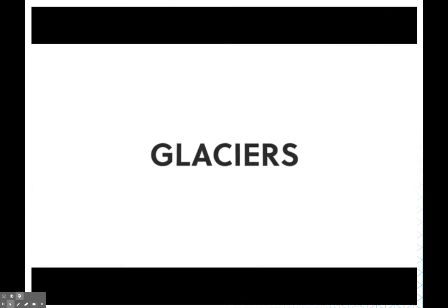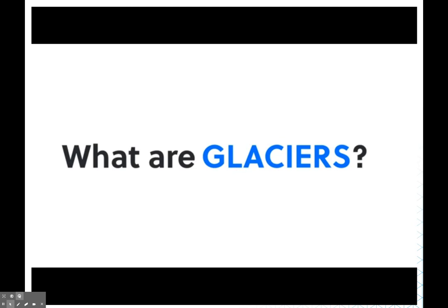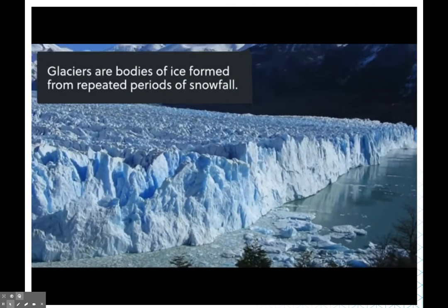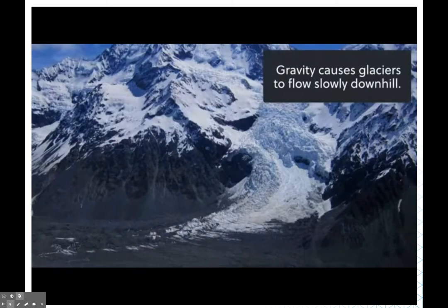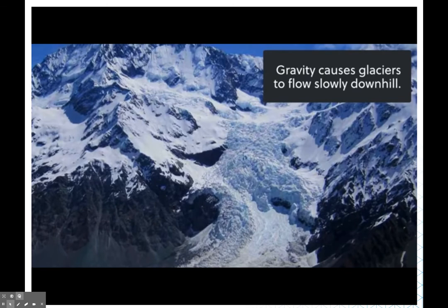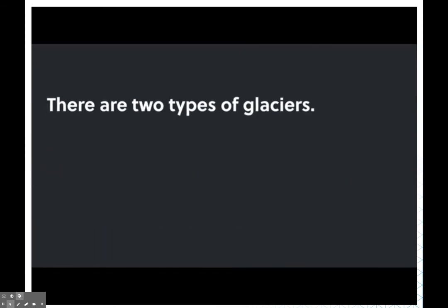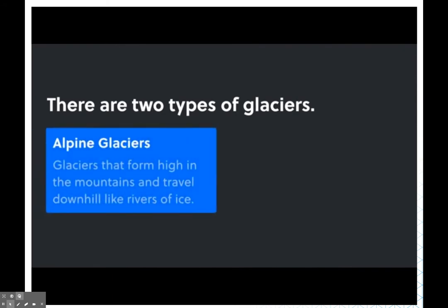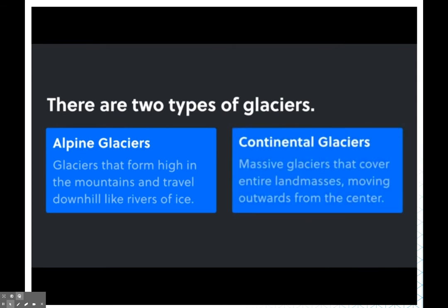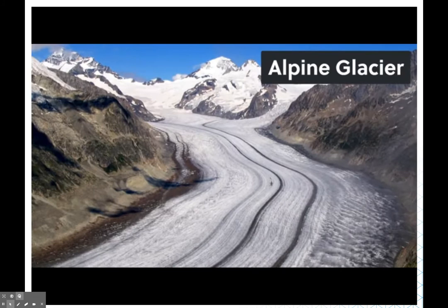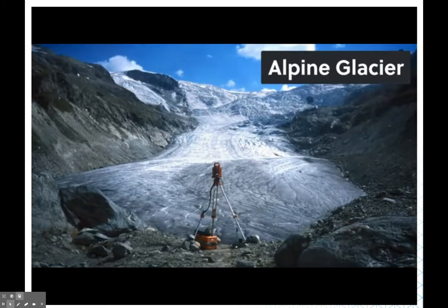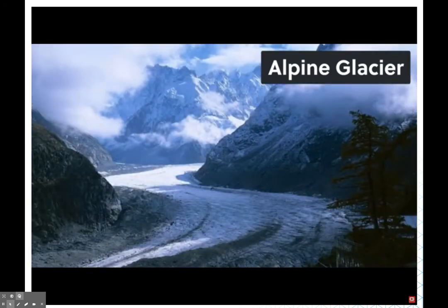Glaciers are simply bodies of ice that form from repeated periods of snowfall. Once they form, they are pulled very slowly downhill by gravity. There are two types: alpine glaciers, which form high up in the mountains and travel downhill like rivers of ice, and continental glaciers, which are massive and cover entire land masses. Here's an alpine glacier — it looks just like a river of ice flowing slowly downhill, carving out rock as it goes.